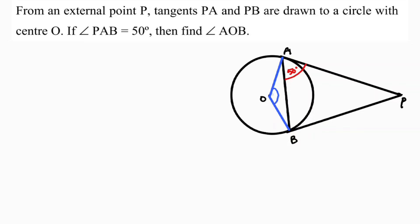I will consider angle AOB as X. Let me first roughly explain how the problem will be done. OA is the radius and AP is the tangent, so the angle between radius and tangent is 90 degrees. Since PAB is 50, angle OAB will be 40 degrees. The same way, angle OBA is also 40 degrees. So X is 100 degrees. I will explain in detail.